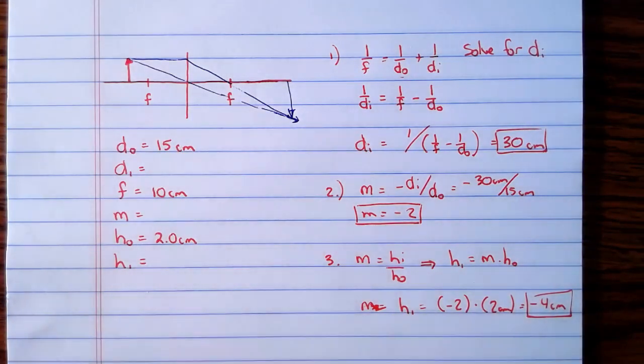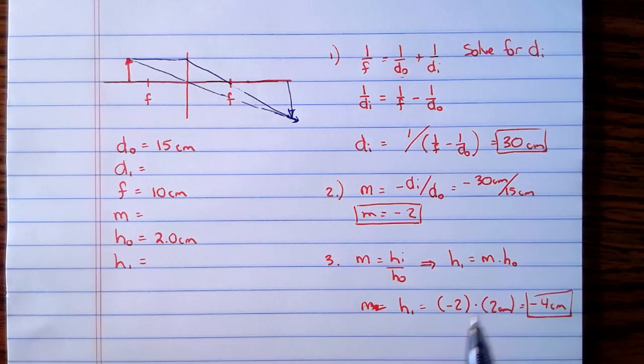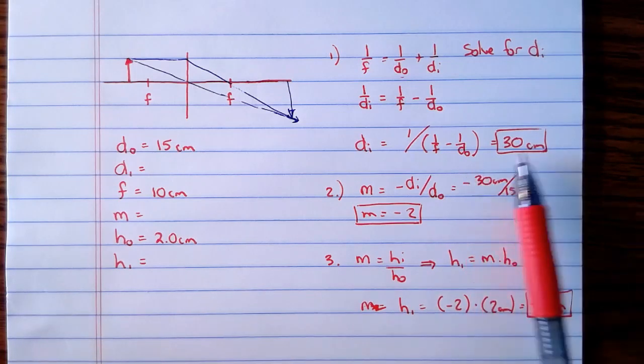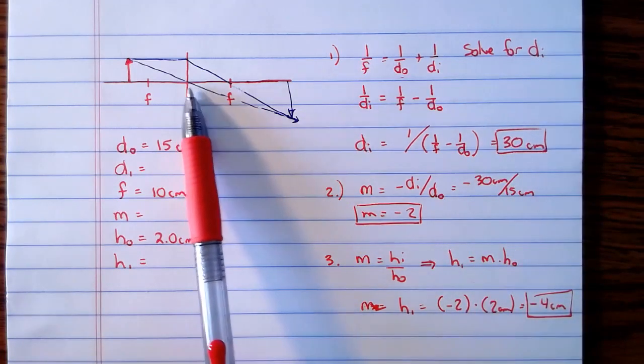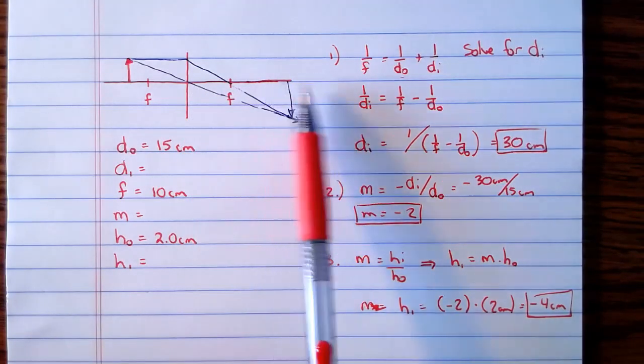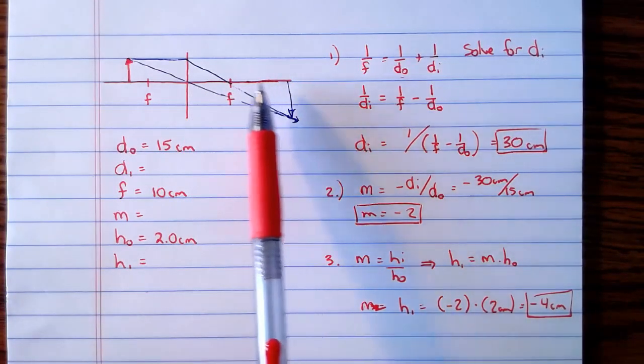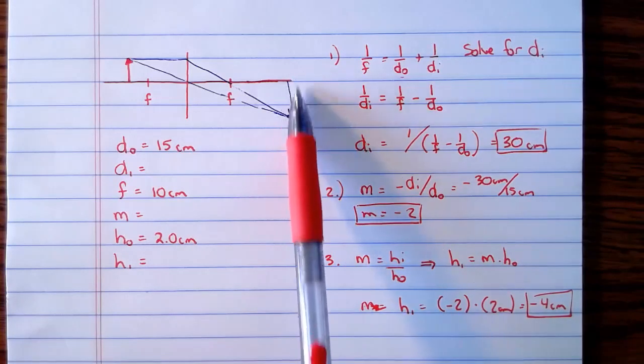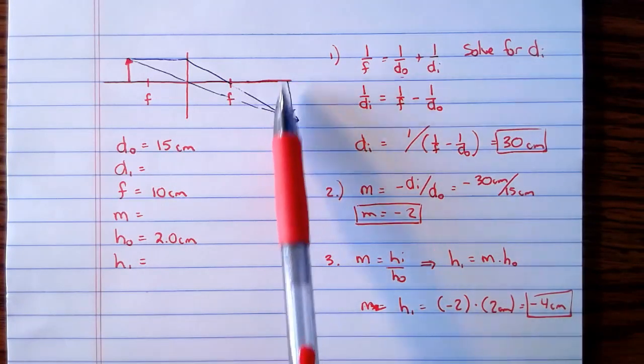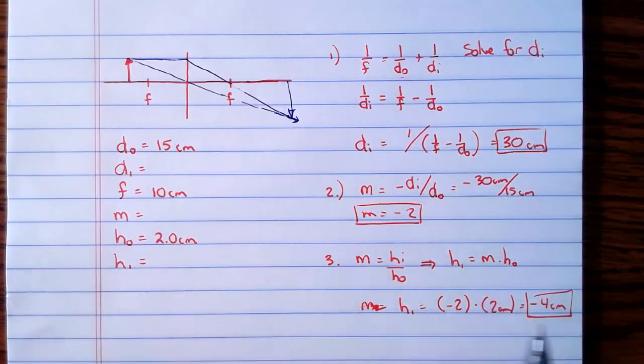So there we go. We found all three things. We found that the image is 30 centimeters from the lens, which kind of makes sense, right? Because if this is 10, there's 20, that's a little more than 20. Our diagram's not perfect, but it shows us that it's kind of out there. We can see from the diagram that the image is actually bigger and it's upside down. And so those all agree with our solutions there. So you guys are going to solve some problems that look like this now.